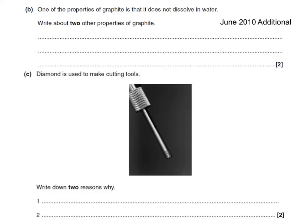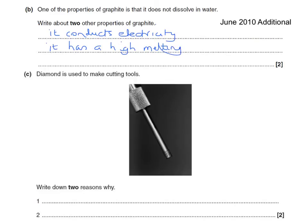Here's another question: One of the properties of graphite is that it doesn't dissolve in water — write down two other properties of graphite. Let's think of two other ones: it conducts electricity, and it has a high melting point. The two properties from the previous question would have done just as well — just offering a bit of variety here.